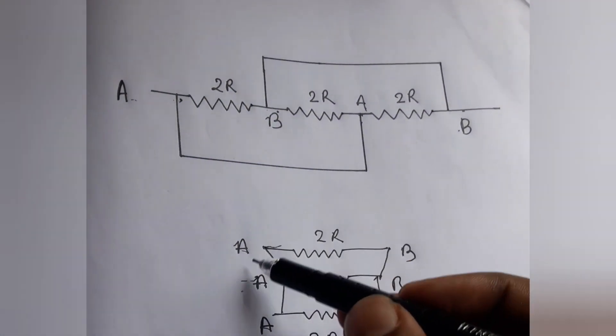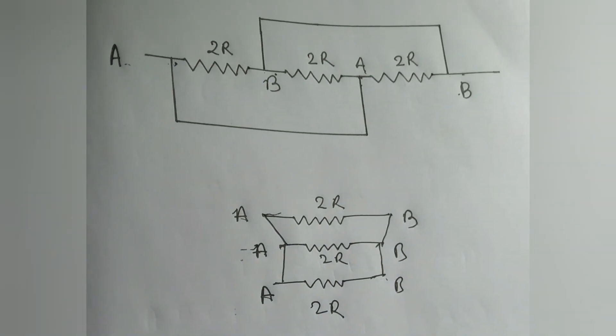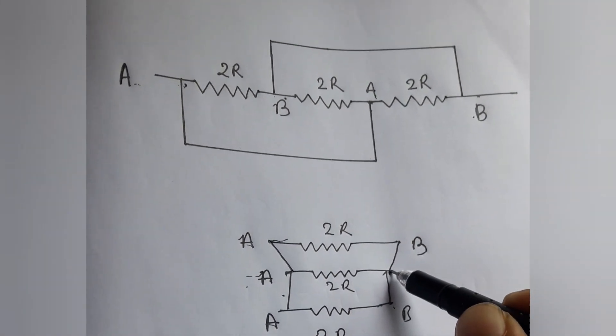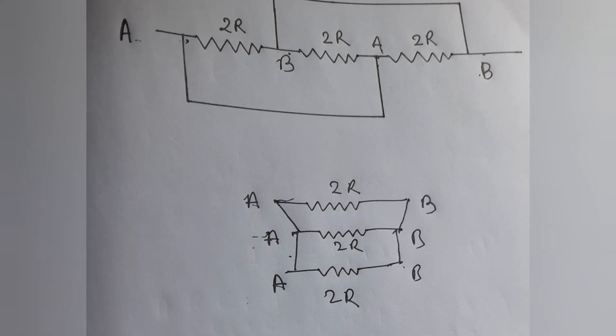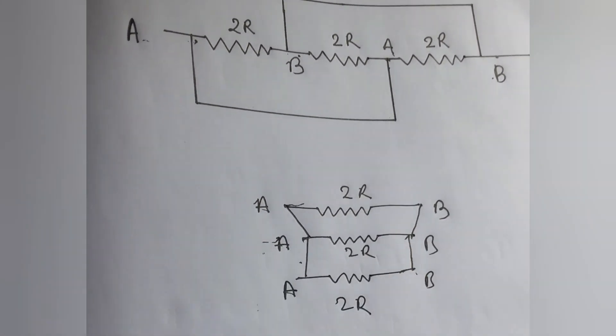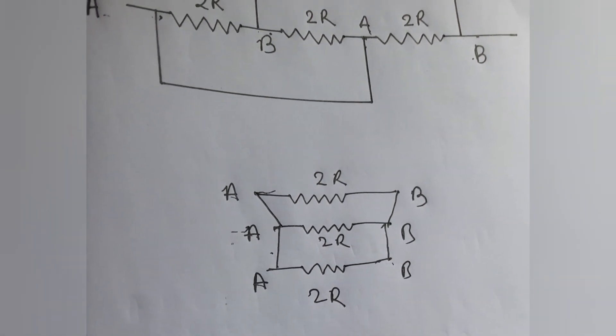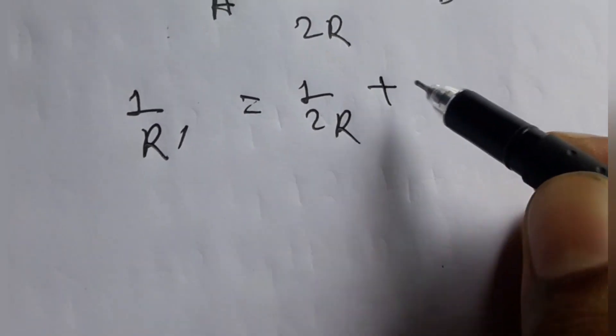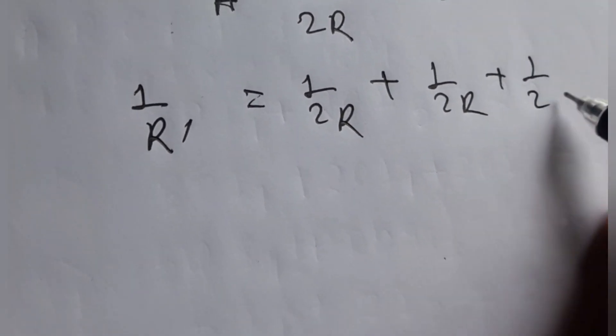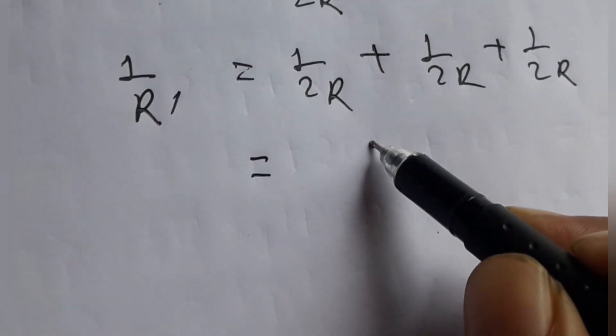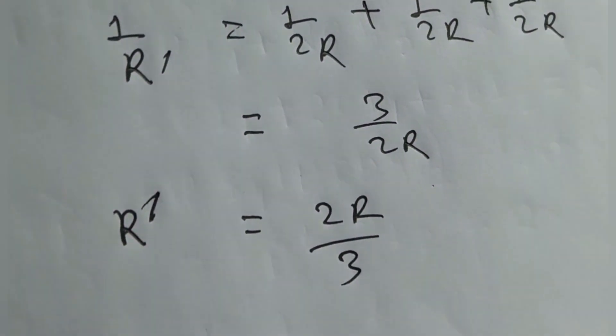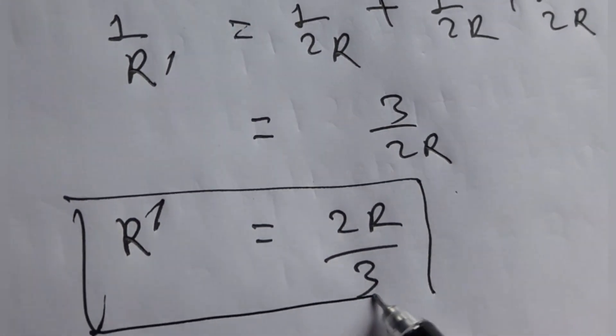Now we see that these three resistances are connected in parallel. This is the common point A and that is the common point B. Now according to the equivalent resistance of parallel circuit, if R' is the equivalent resistance, then 1/R' = 1/2R + 1/2R + 1/2R = 3/2R. Therefore we get the equivalent resistance R' = 2R/3. This is the required result.